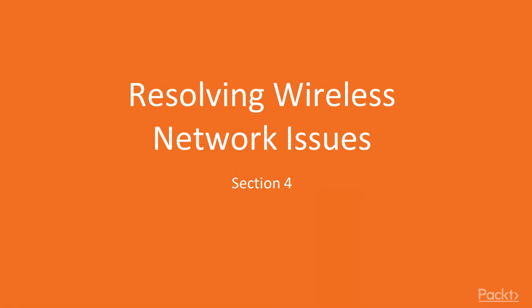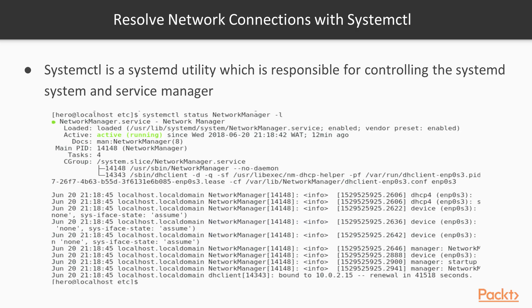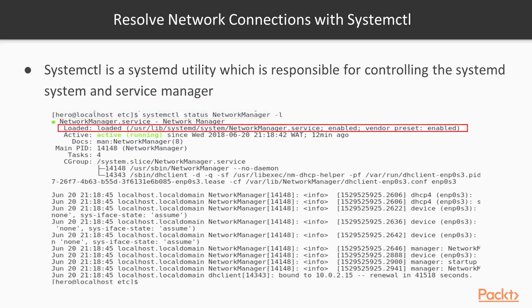Welcome to section 4. In this video we're going to talk about resolving network connections with systemctl. Systemctl is a systemd utility which is responsible for controlling the systemd system and services. As we can see in the image, the command to output the network manager is 'systemctl status NetworkManager -l', and we can see that this is loaded.